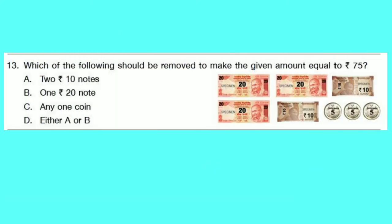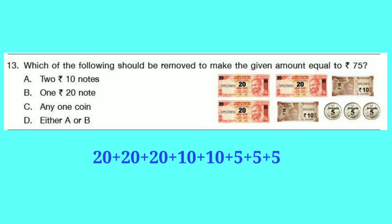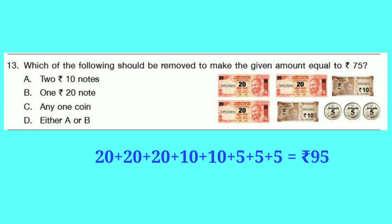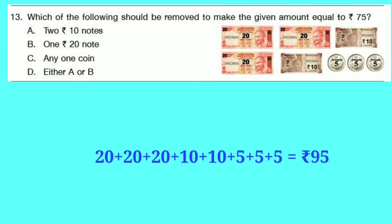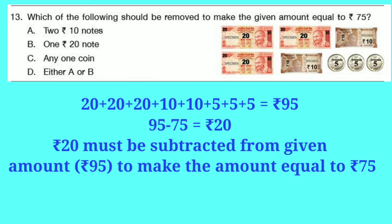Question number 13: Which of the following should be removed to make the given amount equal to 75? Adding the values: 3 twenty-rupee notes, 2 ten-rupee notes, and 3 five-rupee coins gives a total of 95. To make it equal to 75, we subtract 75 from 95, which equals 20. So we must remove 20 rupees — either 1 twenty-rupee note or 2 ten-rupee notes. Option D is correct — either A or B.